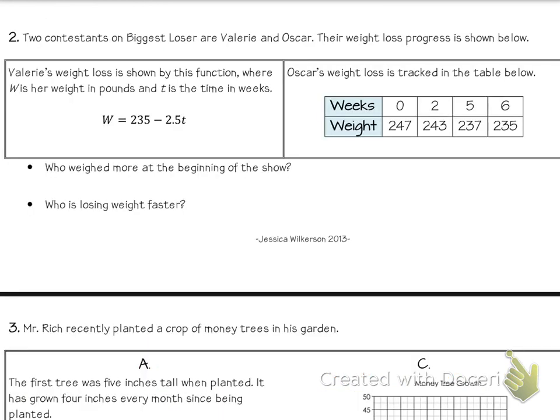All right, the next problem says two contestants on The Biggest Loser are Valerie and Oscar. Their weight loss progress is shown below. Valerie's weight loss is shown by this function where W is her weight in pounds and T is the time in weeks. Careful, W does not mean weeks because that's T. Oscar's weight loss is tracked in the table. So who weighed more at the beginning of the show? Well, beginning of the show, that's when weeks is zero. That's when the input is zero. So what I'm going to do is I'm going to take weeks as zero. Remember this is T in this case because they told us T is the time in weeks.